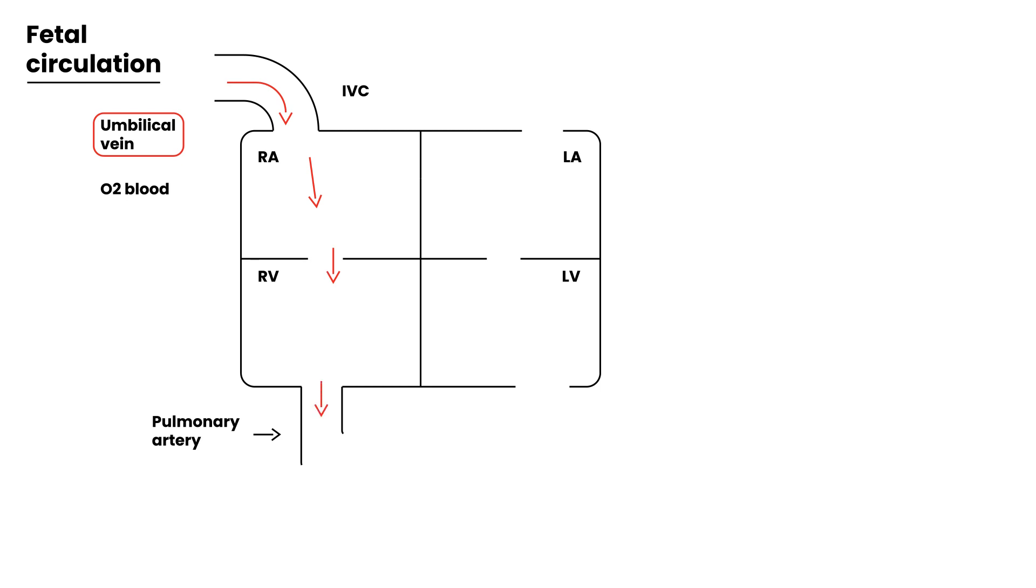It comes through to this side. We just said that it doesn't go to the lungs. Well, there's a special connection, and I'll exaggerate it. Before I write it in, I should put the aorta in here. This is the aorta that's coming out through the left ventricle.